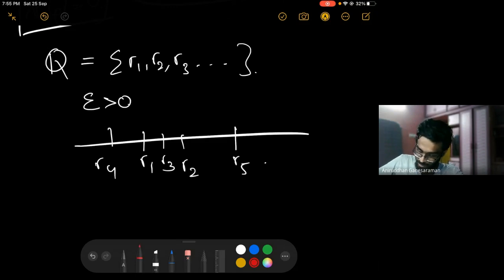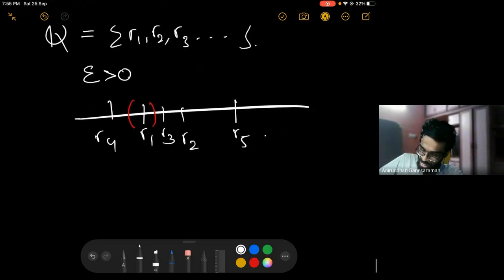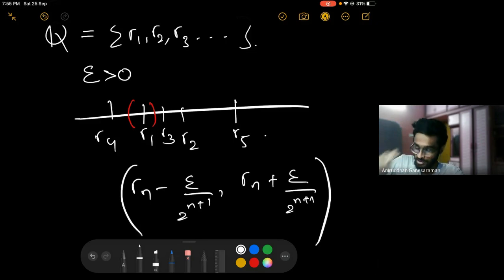What you do is around rn you construct a ball. Around rn you take the interval (rn minus epsilon over 2^(n+1), rn plus epsilon over 2^(n+1)).